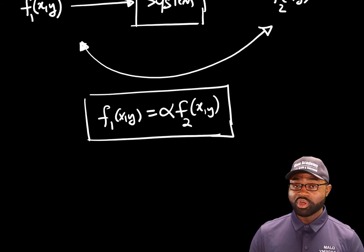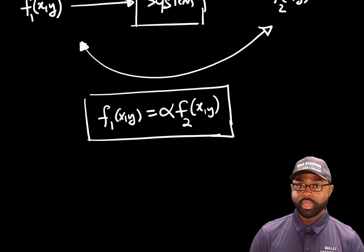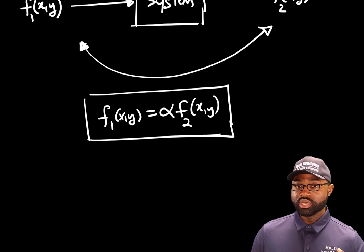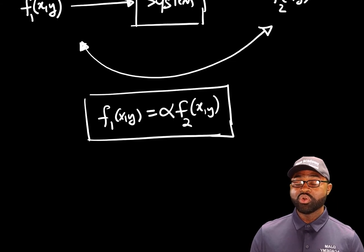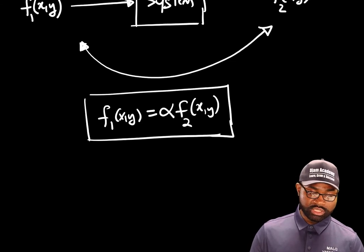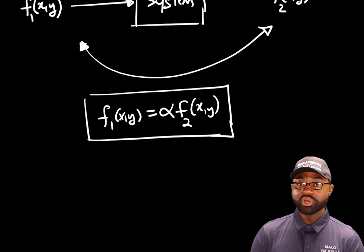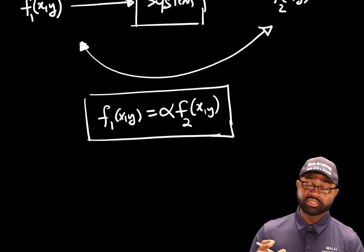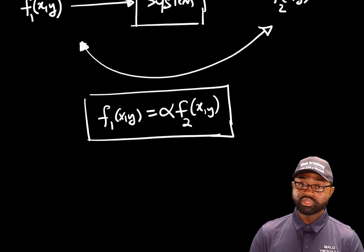A good example of a signal that you can relate with is your voice. Another typical example of a signal is the electrical current flowing through a resistor or the voltage across a capacitor in an RC circuit. In relation to medical physics, understanding the concepts of signals and systems is fundamental to describing or modeling medical imaging systems.